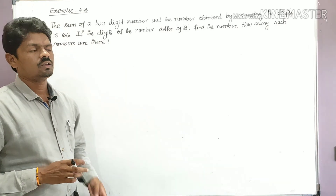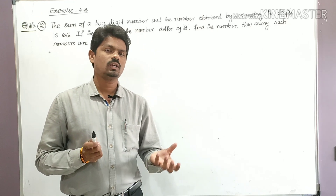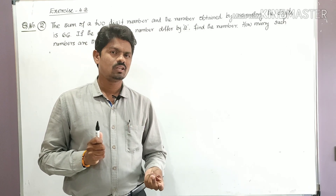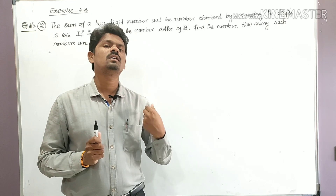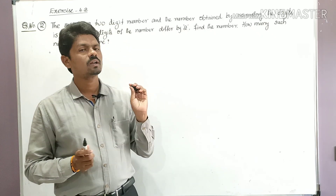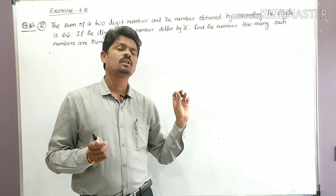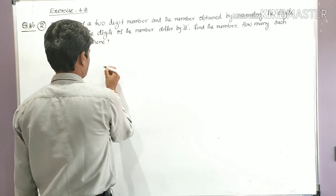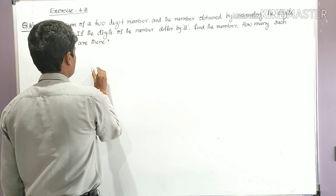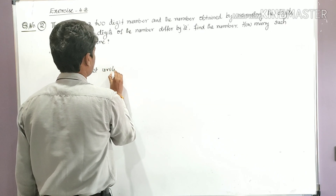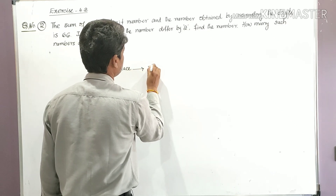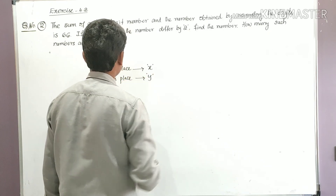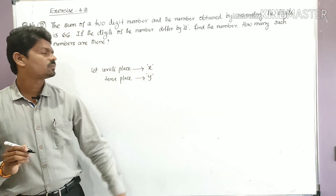We have to find the two-digit number. In a two-digit number, one digit is in the units place and the other is in the tens place. Let the digit in the units place be x and the digit in the tens place be y.